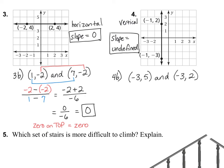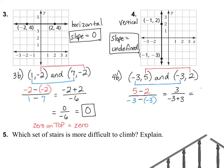For 4B, write the skeleton of the formula — a fraction with two subtraction signs. Y numbers on top: 5 and 2. X numbers on the bottom: negative 3 and negative 3. Simplifying: 5 minus 2 is 3, and negative 3 minus negative 3 is a double negative giving negative 3 plus 3, which equals 0. So we have 3 over 0. Anytime you have 0 on the bottom, the answer is undefined.